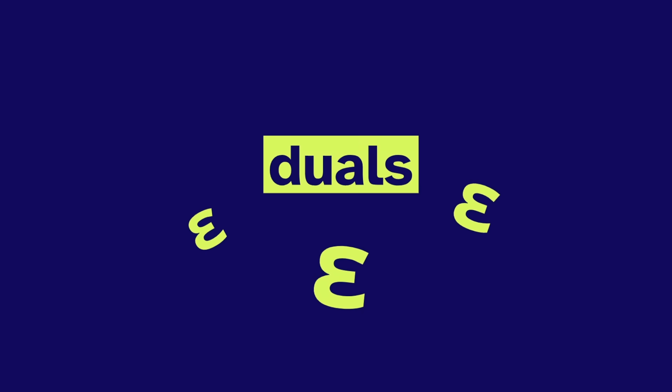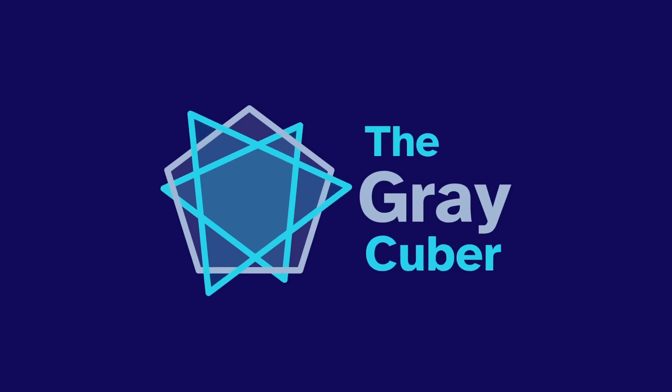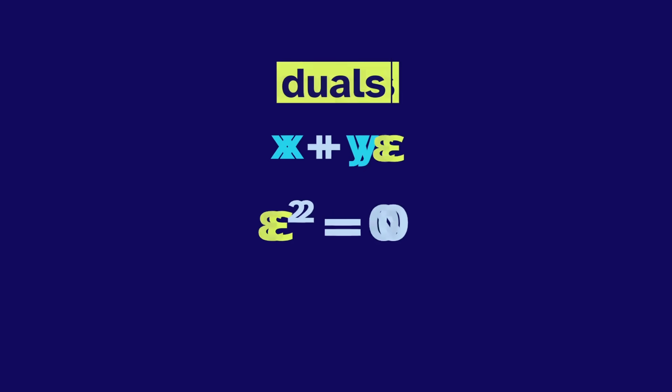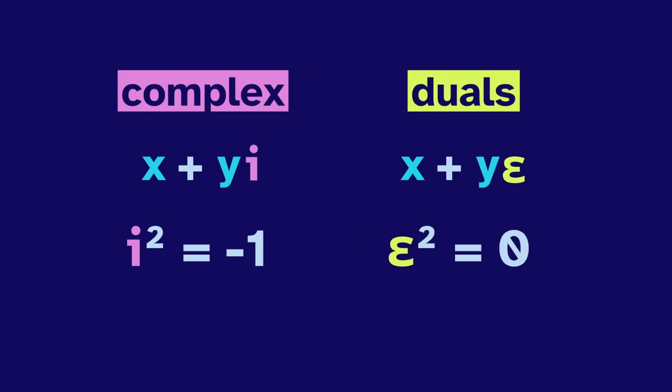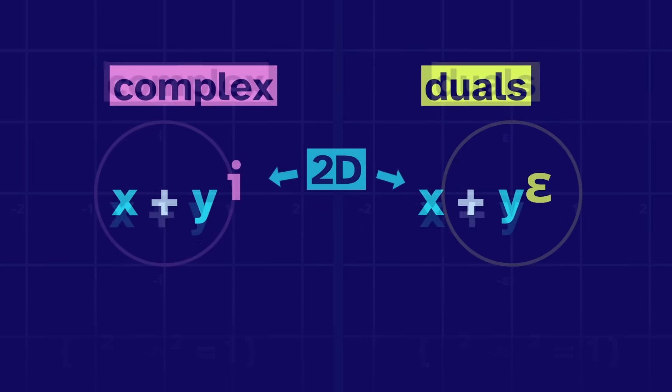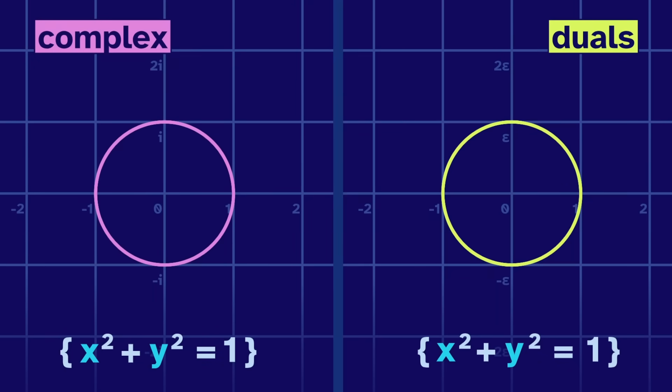In this video, we'll be looking at the duals. The duals are all numbers x plus y epsilon, where x and y are real, and epsilon squares to zero. They're like the complex numbers with the rules changed. And because both systems are two-dimensional, we can make shapes using sets of numbers.